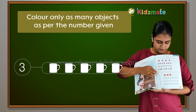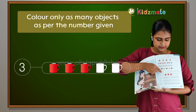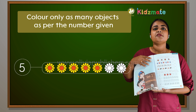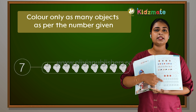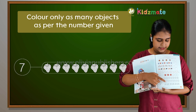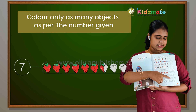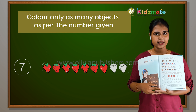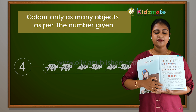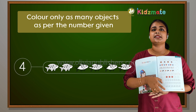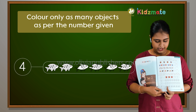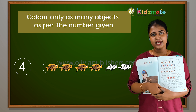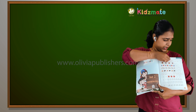Number 3 — color 3 cups. Number 5 — so you should color 5 flowers: 1, 2, 3, 4, 5. Five flowers should be colored. Then 7 — you should color 7 strawberries: 1, 2, 3, 4, 5, 6, 7. Do you all have the color bands with you? Number 4 — 4 fishes: 1, 2, 3, 4. You should color 4 fishes. Shall we move to the next page? Page number 42.